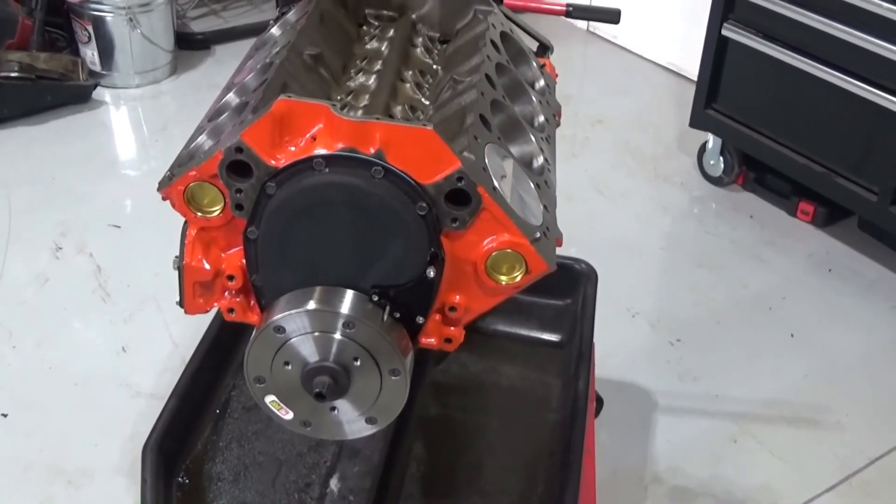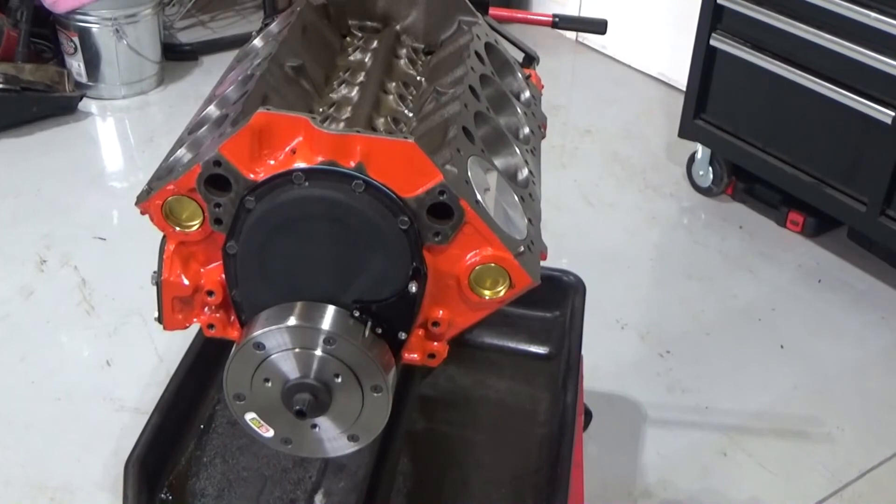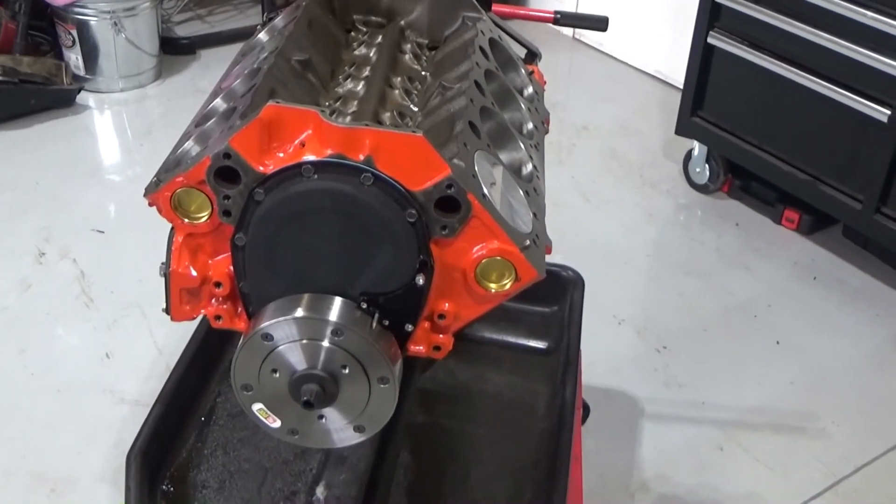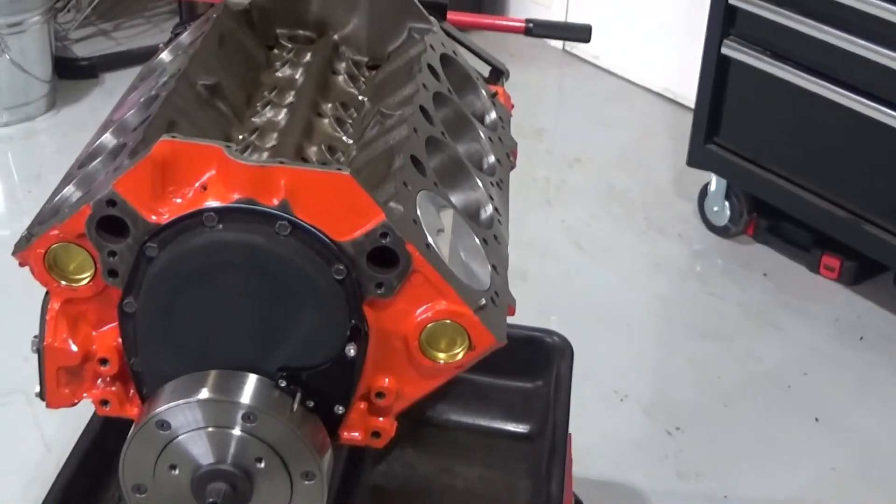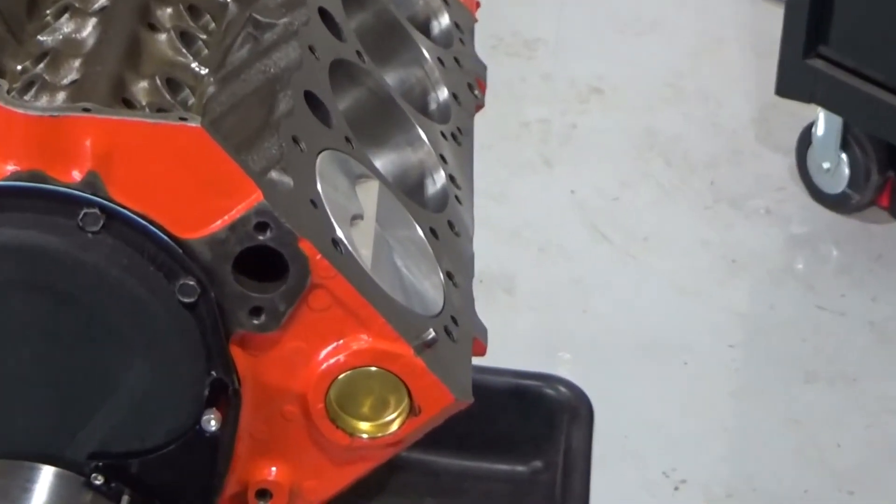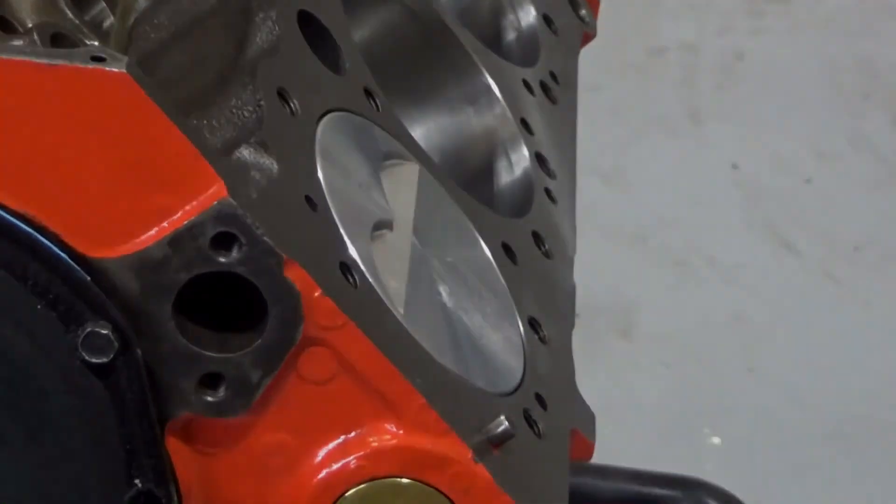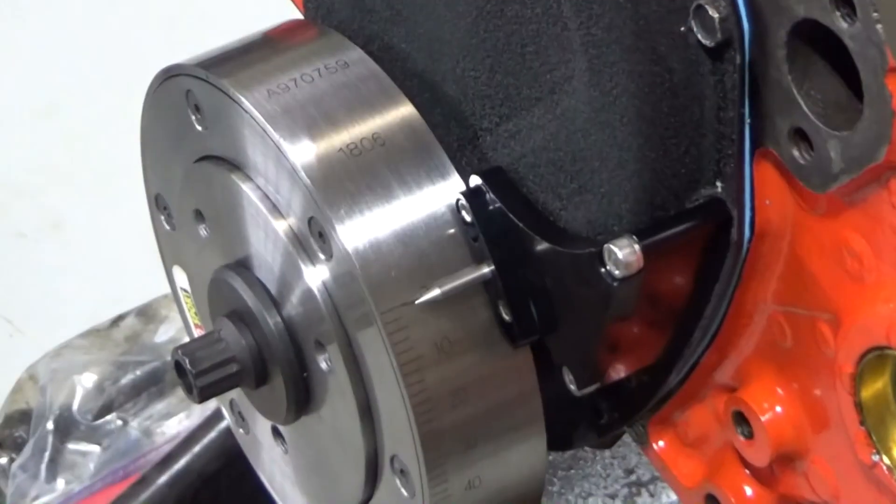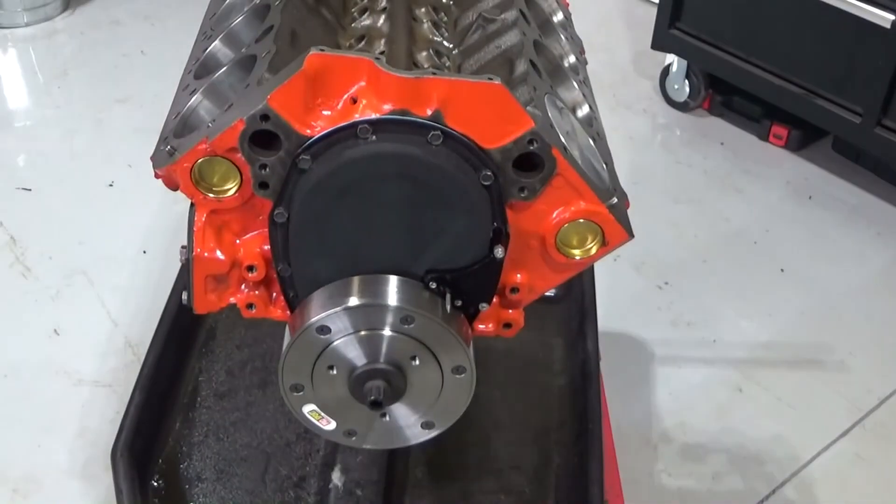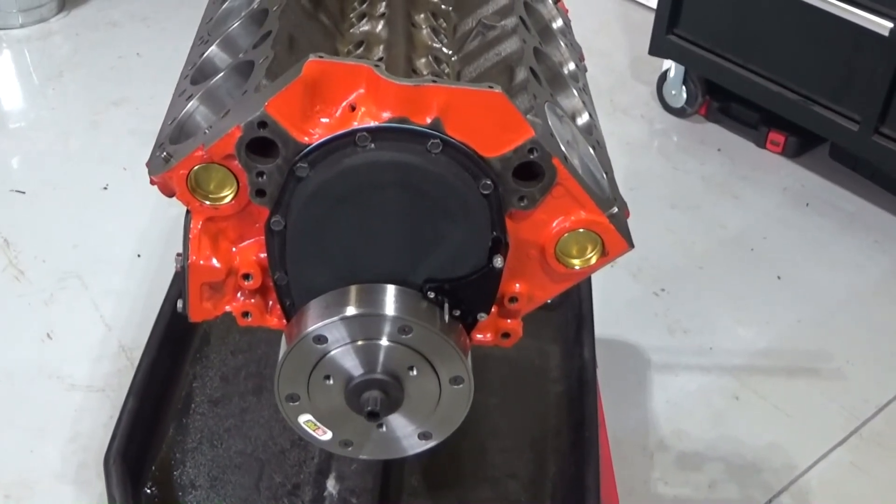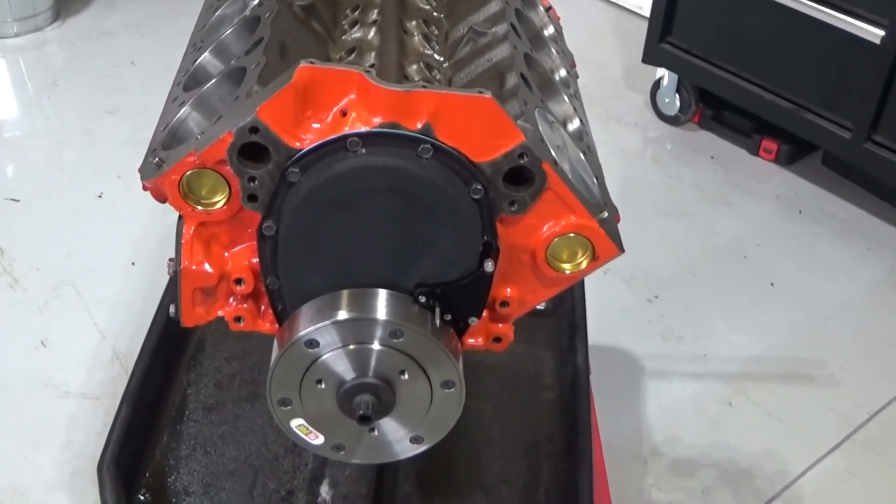I degreed the camshaft. I have my timing cover installed, and I got my timing pointer installed. I used the dial indicator and brought this number one piston back up to top dead center, true top dead center. Hopefully you can see that the timing pointer lines up pretty much dead on zero. Next step is going to be flipping this engine over and getting the oil pump and oil pan installed.